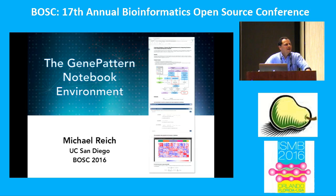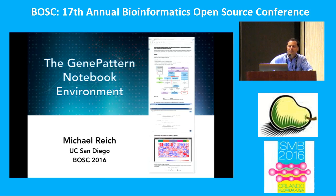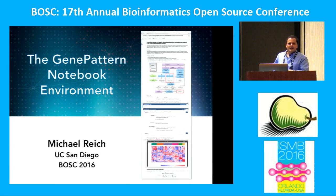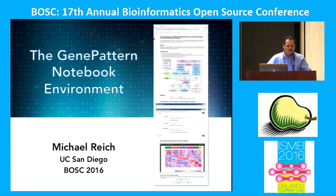Thank you, and my suggestion for BASC 2017 is to have a BASC bingo, where everybody would get cards that would say Jupiter, Docker, Galaxy, IGV, and there would be a prize for the first person to get all those terms, so you're going to hear some more now in this talk.